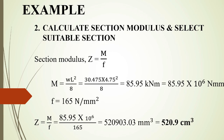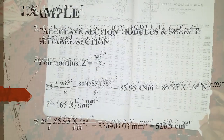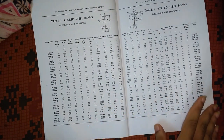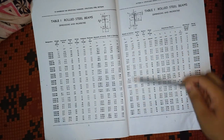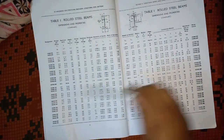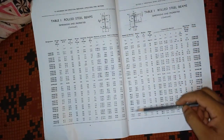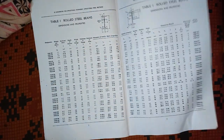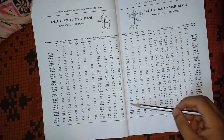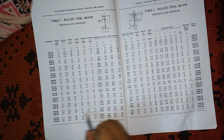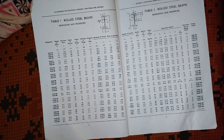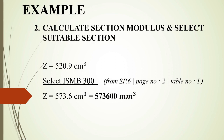Let's look at the steel table. We find the ZXX values for rolled steel beams. We select the nearest section with ZXX just above our calculated value. The required Z is 521.21 cm³, so we select the section with ZXX = 583.6 cm³, which corresponds to the designation ISMB 300. We select the ISMB 300 section.